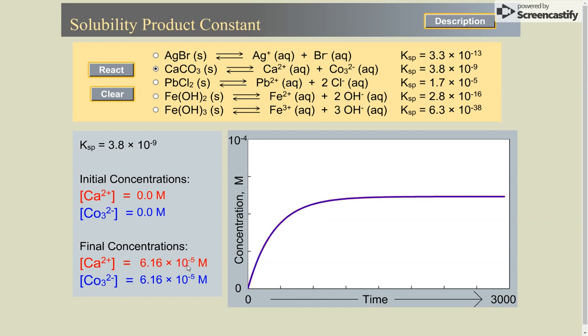10 to the minus 5 is a much bigger value than 10 to the minus 7. So calcium carbonate is more soluble and it has a bigger Ks value.